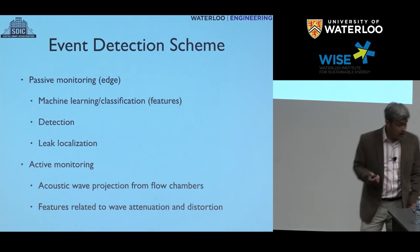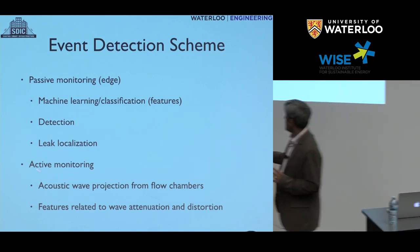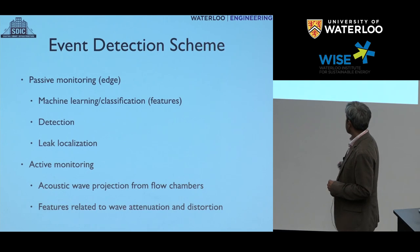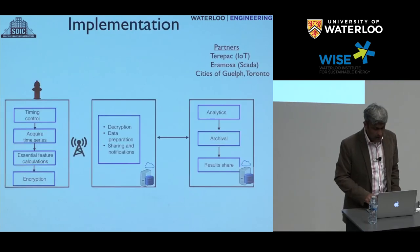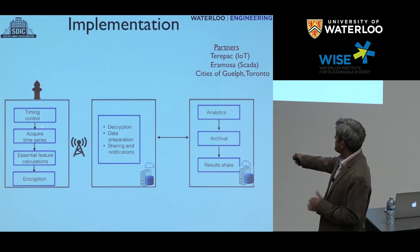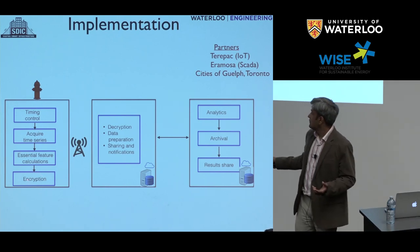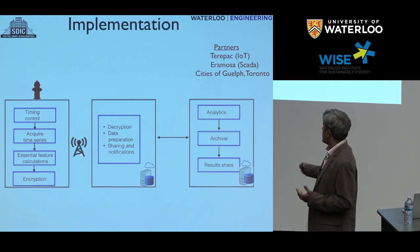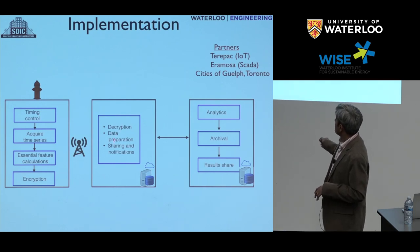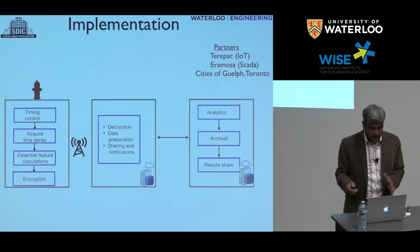There are lots of tests being done in the hydraulics lab: passive monitoring with machine learning classification, detection, and localization. We are also looking at active monitoring using sonar principles to localize leaks, as well as wave attenuation and distortion. The intelligent edge at the hydrant handles timing control, time series acquisition, feature calculations, and encryption — with cellular connectivity for data sharing and notifications. Feature extraction uses standard machine learning with frequency peaks, root mean square, and the Bhattacharyya distance that looks at distances between two histograms. Those types of features give you an idea whether there is a leak occurring.